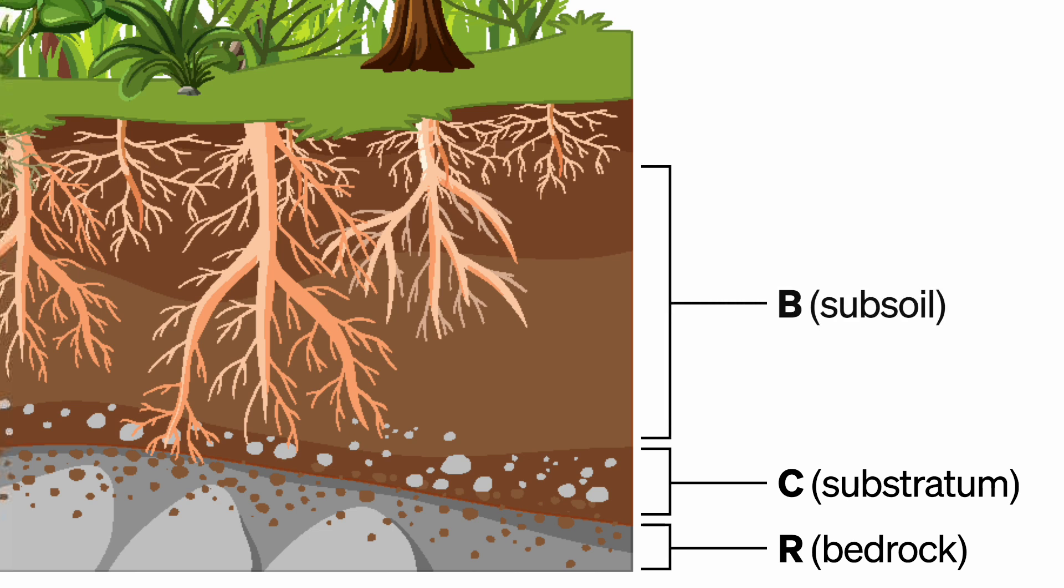Above that, we have the B layer or subsoil, which is a mix of weathered rock material and organic matter. This is also where deeper roots exist.